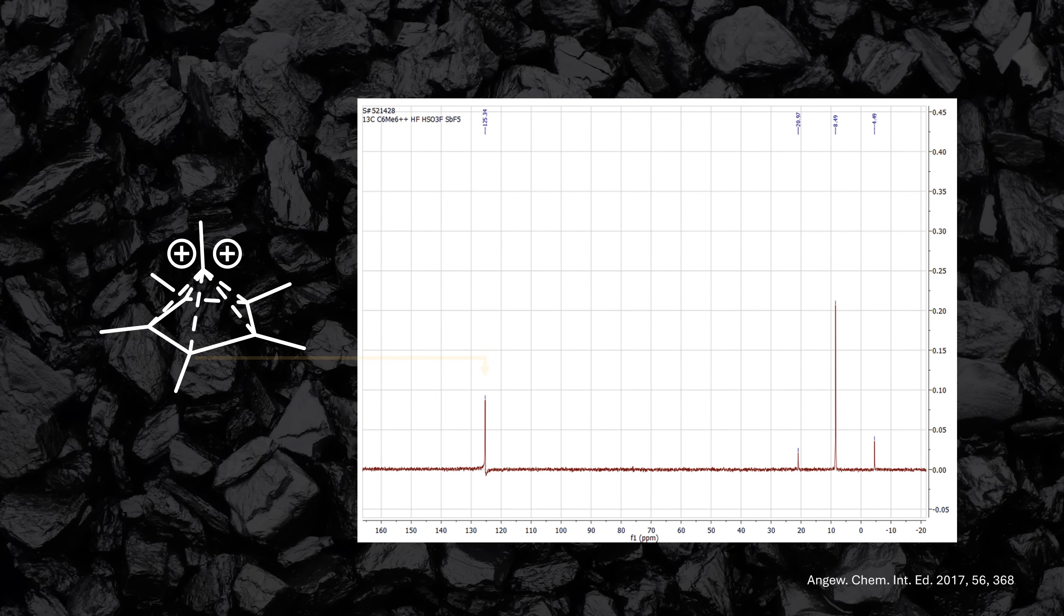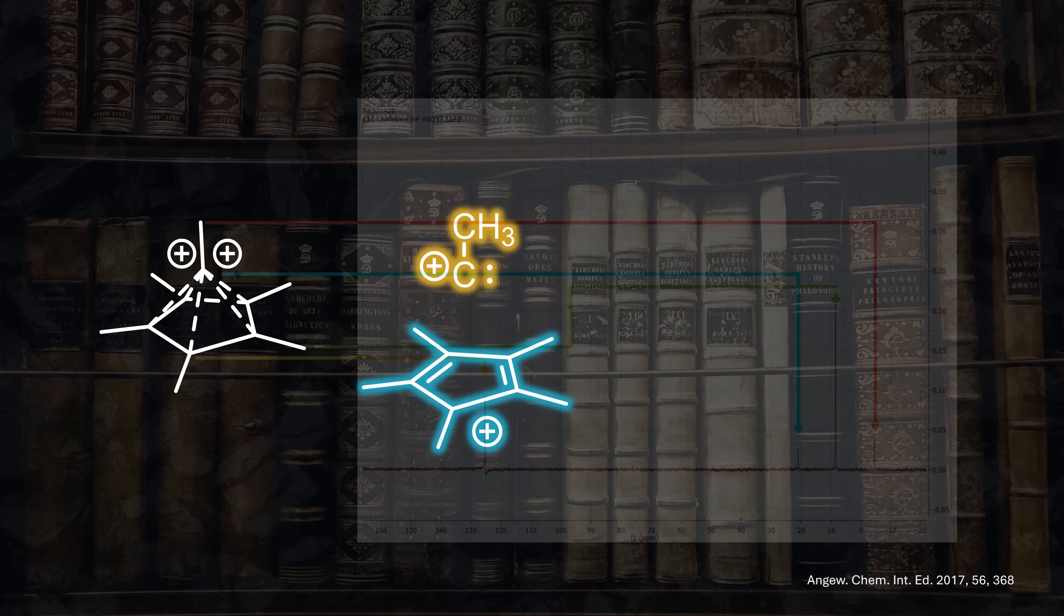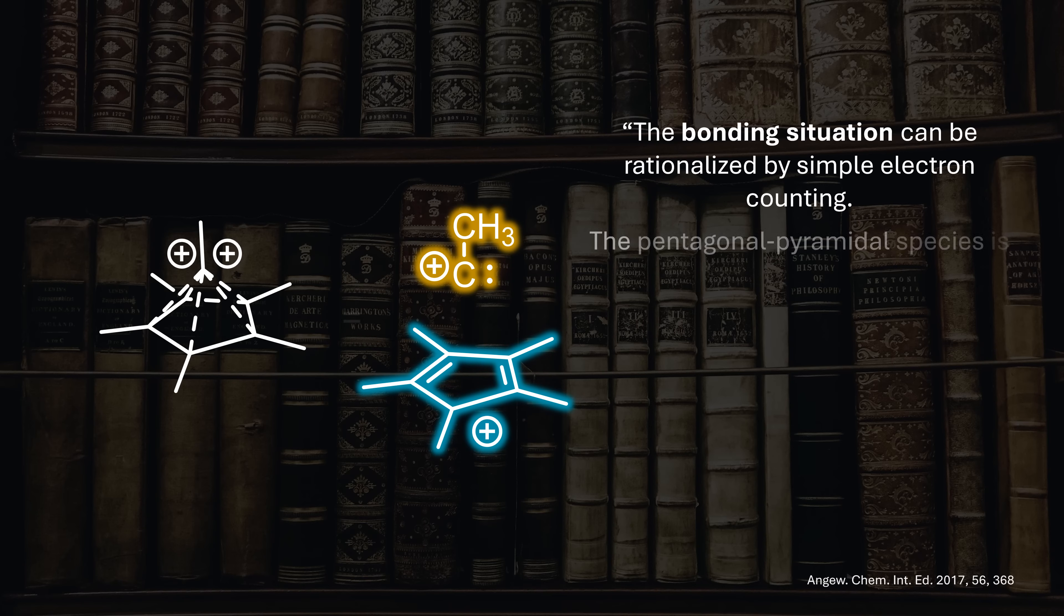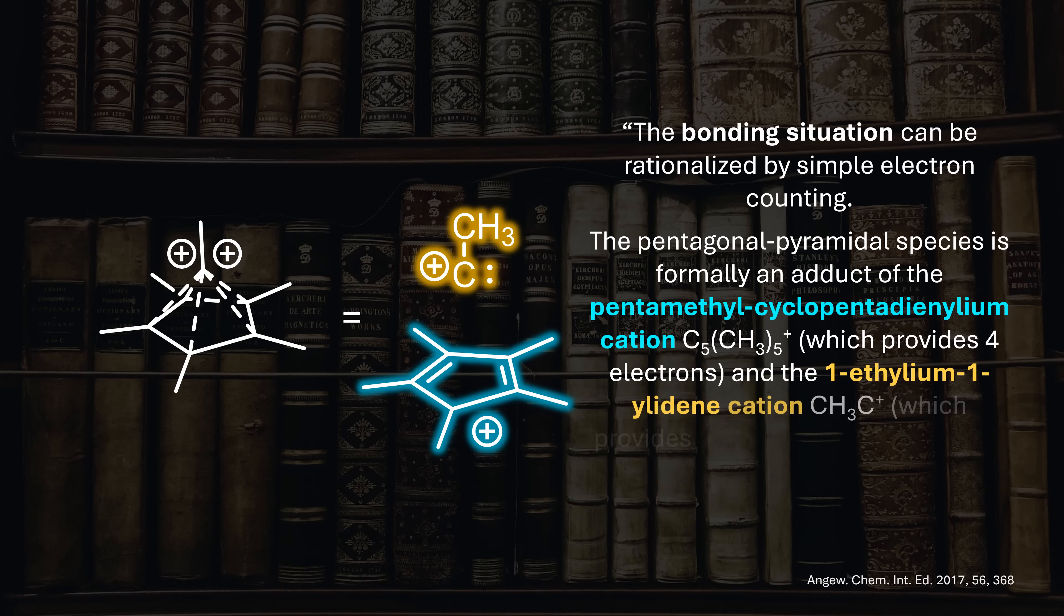We see the ring carbons, the apical carbon, the five methyl groups at the base, and at a negative chemical shift, the top methyl group which is extremely shielded. The chemists propose that the system corresponds to a cyclopentadiene cation interacting with an ethyl-ilidine cation through a total of six electrons in the pyramid.